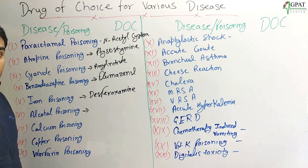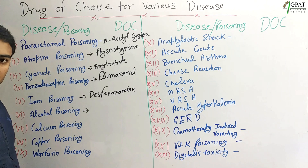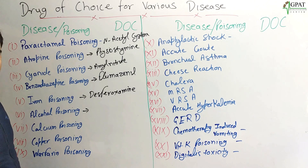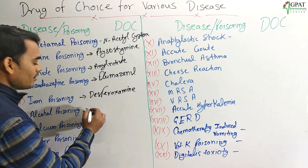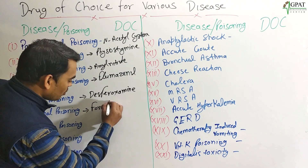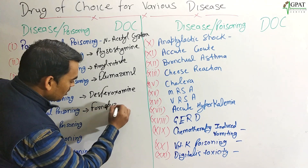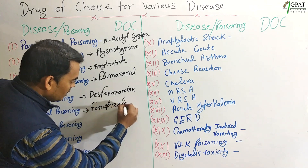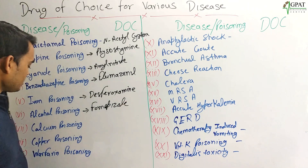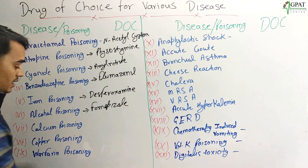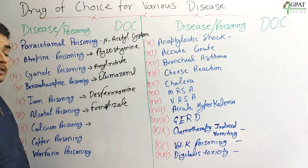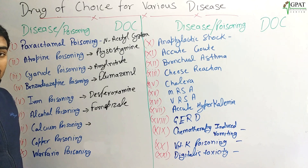For alcohol poisoning — basically we are talking about methyl alcohol — Fomepizole is the drug of choice.